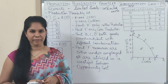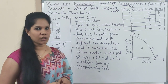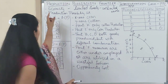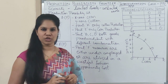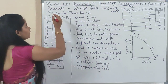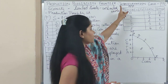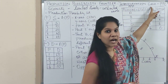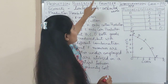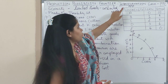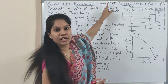Hey everyone, welcome back to my channel. This is Vaishali Sidhapa and today's topic is Production Possibility Frontier in Microeconomics, First Chapter. One more name for Production Possibility Frontier is Transformation Curve, otherwise we call it PPC which is Production Possibility Curve, or PPF which is Production Possibility Frontier.